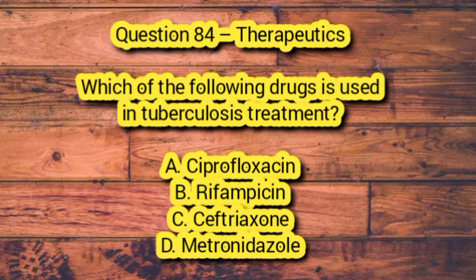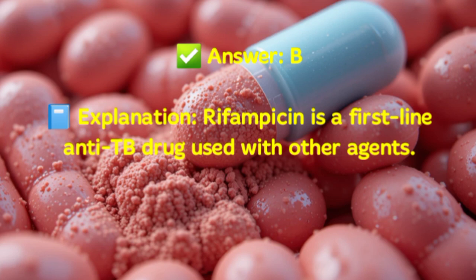Question 84 – Therapeutics. Which of the following drugs is used in tuberculosis treatment? A. Ciprofloxacin. B. Rifampicin. C. Ceftriaxone. D. Metronidazole. Answer: B. Explanation: Rifampicin is a first-line anti-TB drug used with other agents.